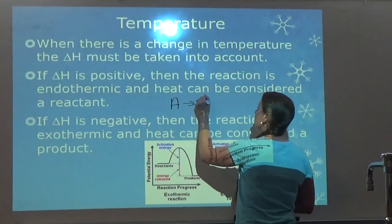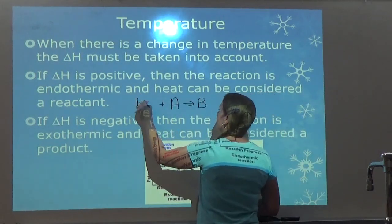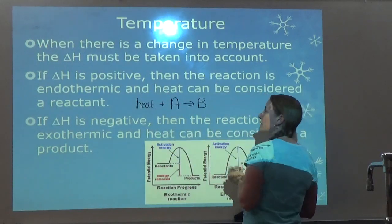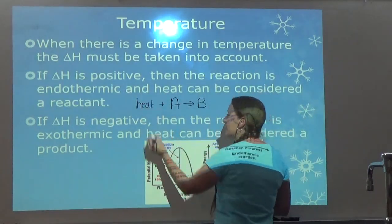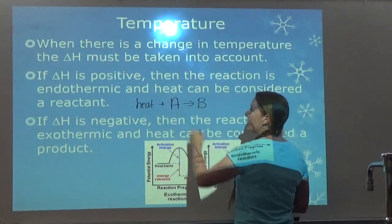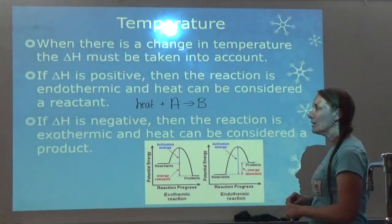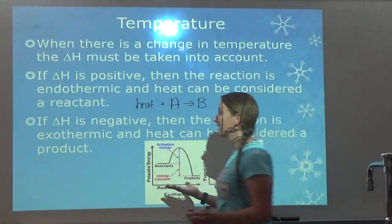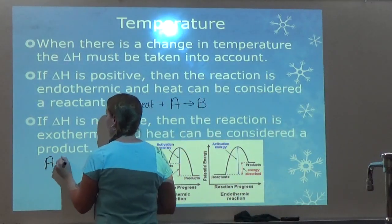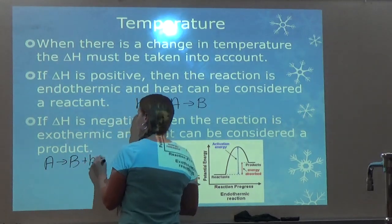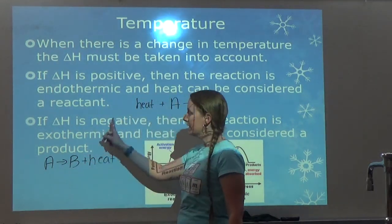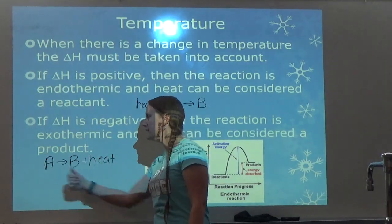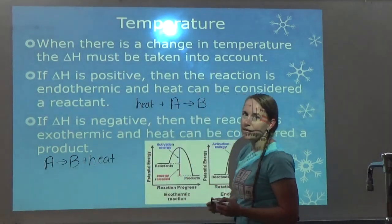If heat is a reactant — say A yields B and heat is a reactant — if I increase heat, it's going to shift to B to get rid of heat. If I decrease heat, it's going to shift to A to make more heat. On the other hand, if delta H is negative, the reaction is exothermic and heat is considered a product. In that case, if I increase heat, it's going to shift to A to get rid of heat; if I decrease heat, it's going to shift to B to make more heat.